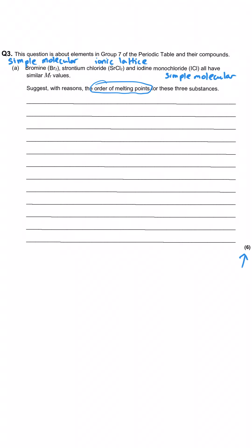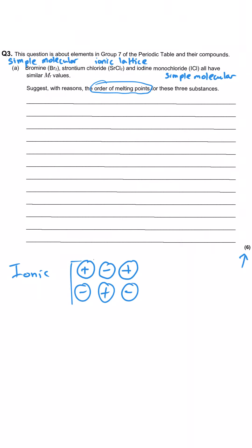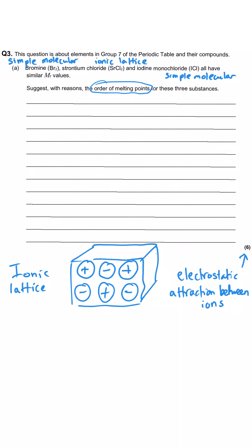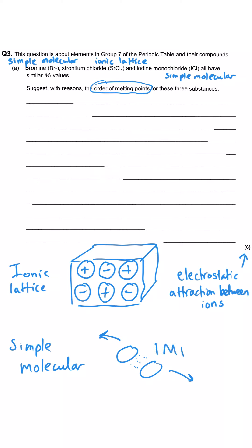Now we need to establish what we're doing when we melt each type of structure. For ionic substances, you're overcoming the electrostatic attractions between positive and negative ions in their three-dimensional lattice — breaking that electrostatic attraction between many ions. For simple molecular substances, all you're doing when separating molecules is breaking the intermolecular forces between them, which is much easier. The most common mistake in a question like this is to talk about breaking covalent bonds — that's not what happens on melting.